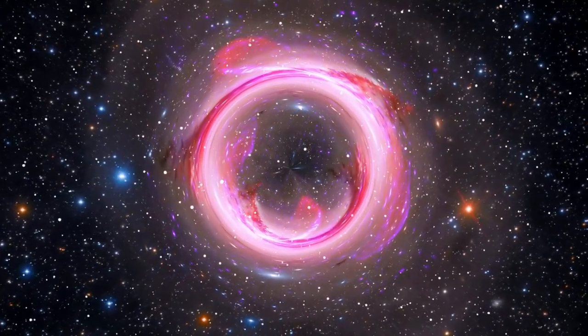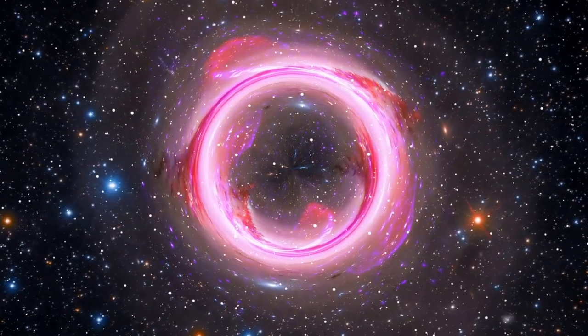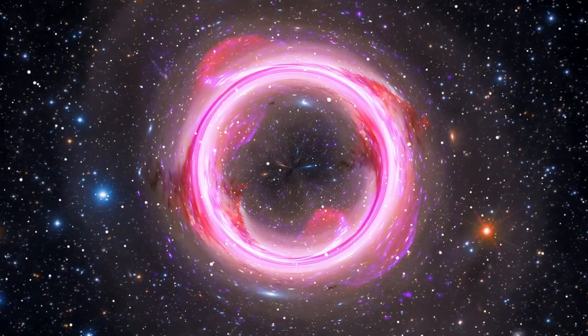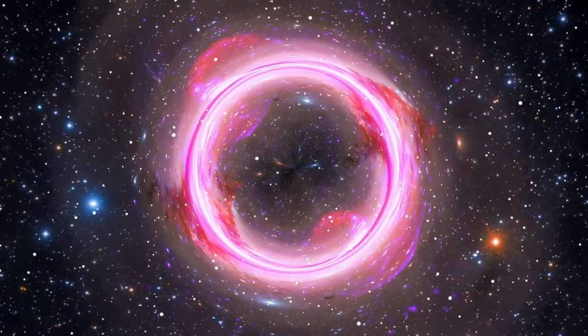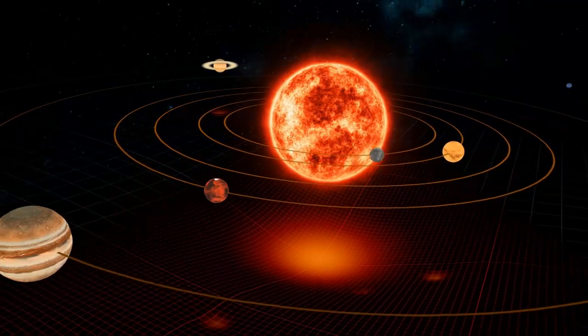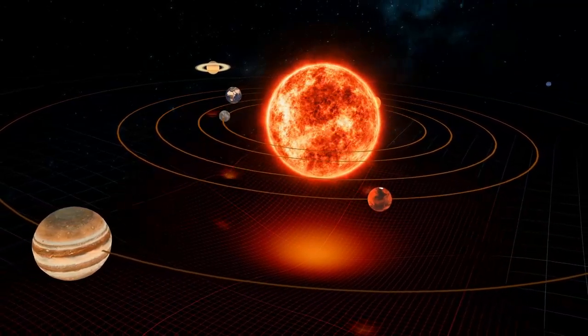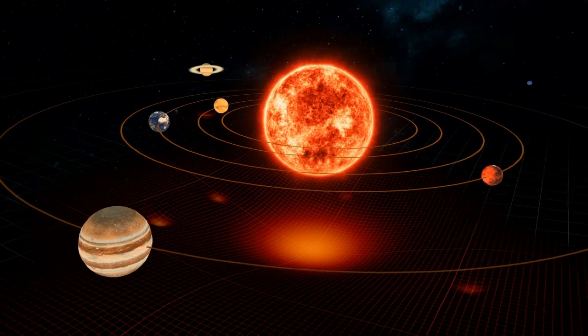Before Einstein, gravity was explained by Isaac Newton as a force that objects with mass exert on each other. For example, the Earth pulls us downward, and the Sun keeps planets in orbit through its gravitational force.